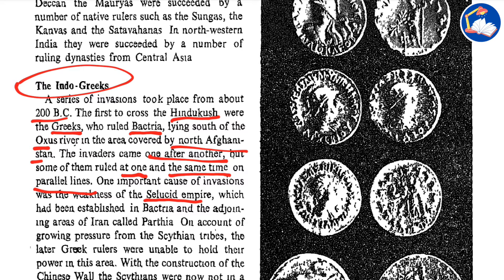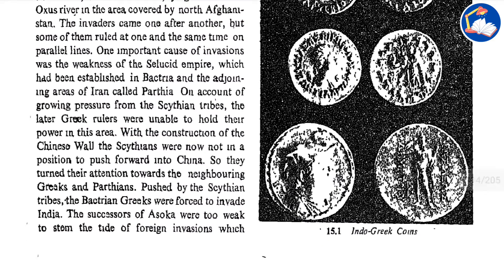One important cause of invasions was the weakness of the Seleucid empire. Once the Seleucid empire began to weaken, invasions took place, creating disintegration within the empire. With the construction of the Great Wall of China, the Scythians were no longer able to push forward into China, so they turned their attention towards the neighboring Greeks and Parthians. Pushed by the Scythian tribes, the Bactrian Greeks were forced to invade India.